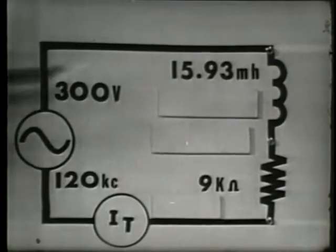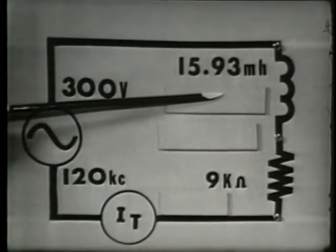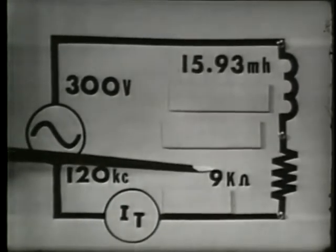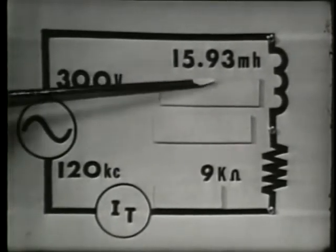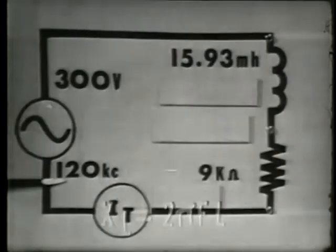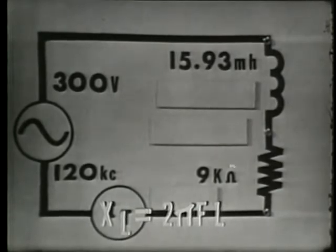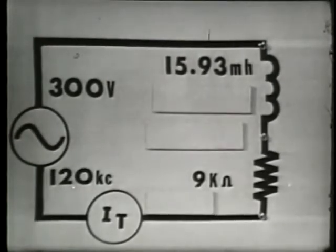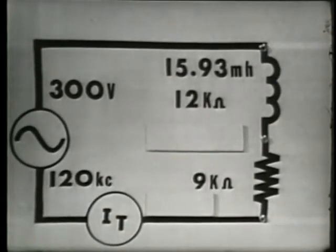To find the total opposition or total impedance, we must find the values of R and XL. Our resistance is given at 9K ohms, while we must compute the value of inductive reactance. Since we have the value of L and the frequency applied, we can use this formula to determine inductive reactance: two pi times the frequency times the inductance. Multiplied out, we find that XL for our circuit is 12K ohms.